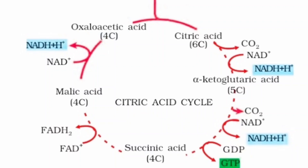One NADH + H⁺ gives three ATPs whereas one FADH₂ gives two ATPs. So on average, the complete oxidation of glucose yields 38 ATPs — two are from glycolysis and the rest are from the link reaction and Krebs cycle combined.